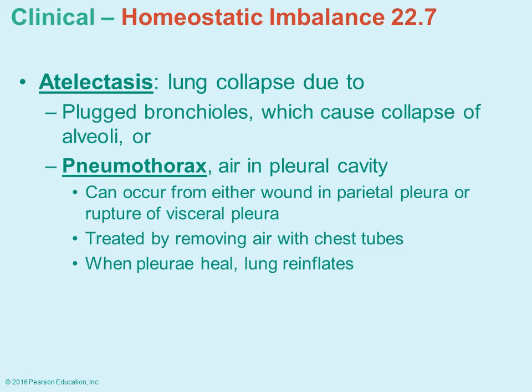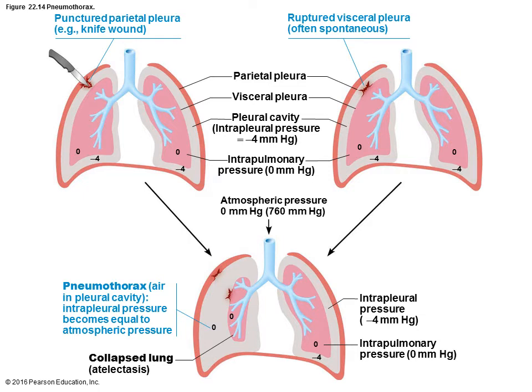You may see collapsed lungs in your work career. Why does this happen? Maybe the bronchioles are plugged. Pneumothorax is when you have air in the pleural cavity — typically it happens because of a chest wound that extends down to the pleural cavity. Air flows in, atmospheric pressure equalizes with pleural pressure, and the lungs collapse. To treat it, you insert a chest tube to remove the air. Once the pleura have healed, the lung will reinflate because the pressure differential is restored.